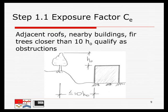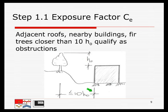How close the trees or neighboring structures need to be is given by a footnote in the ASCE 7 table. For example, if a tree is tall enough and close enough to the structure, it provides shelter. That is, if the height difference is h sub 0, in order for the tree to be considered an obstruction it has to be less than 10 h sub 0 away from the roof.